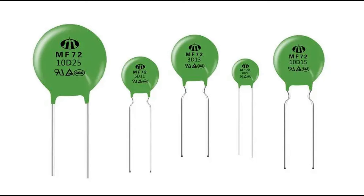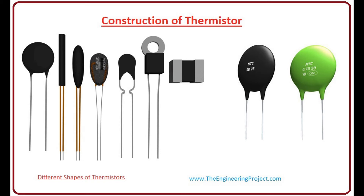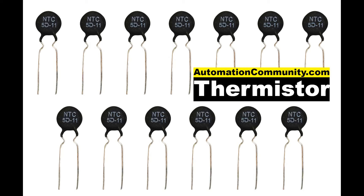PTC thermistors are commonly used as resettable fuses for overcurrent protection. When an overcurrent condition occurs, the temperature of the thermistor rises, causing its resistance to increase sharply, limiting the current and protecting the circuit from damage. Once the fault is removed and the thermistor cools down, its resistance returns to a low value, allowing normal operation to resume. PTC thermistors are also used in self-regulating heating elements: as the heater warms up, the resistance increases, reducing the current and preventing overheating — making them ideal for heating pads, defrosting systems, and temperature-controlled heating elements. They also help protect sensitive electronic circuits by limiting inrush currents or absorbing electrical surges.